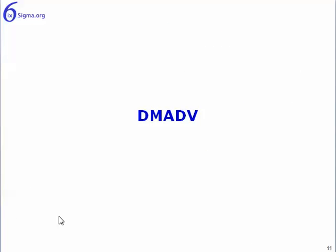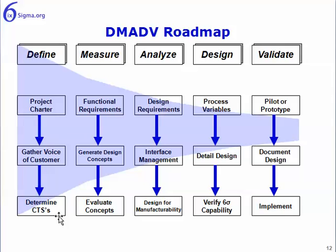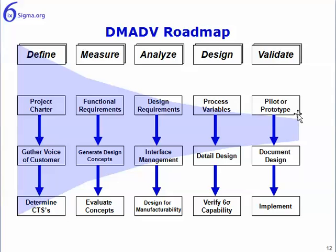On the DMADV side of the roadmaps, you'll notice a funnel in the background. What it indicates is that at this part of the methodology — and the same applies for Lean and DMAIC — there are many potential sources or causes thought to be causes of the problem. As we move through the methodology, we screen those down, eliminate, and rationalize them off our list so that we only have a select few things we're using to control the process. That is the idea of the funnel in the background.